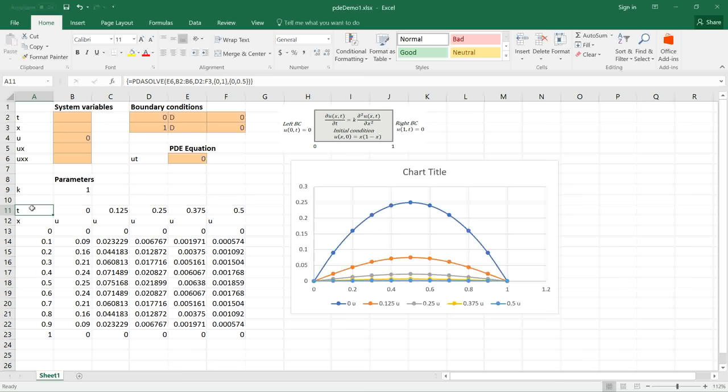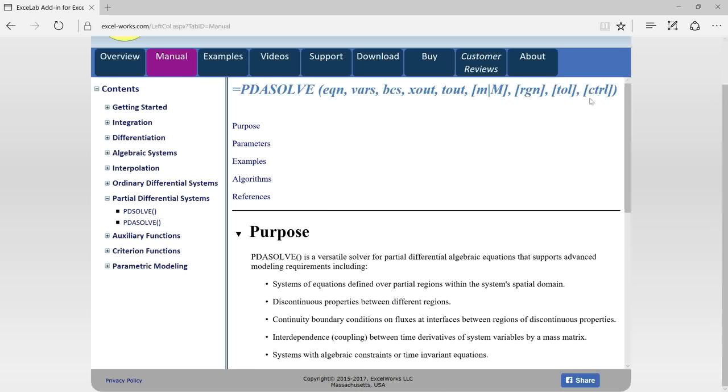To see a transient plot of the solution I can change the solution format by swapping T and X location. I do this by specifying the format key in the optional controls parameter argument number nine. Argument number nine takes key value pairs which is described in detail in the manual page for PDESolve at excel-works.com.